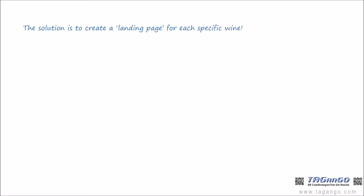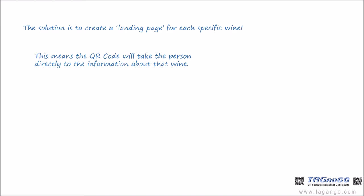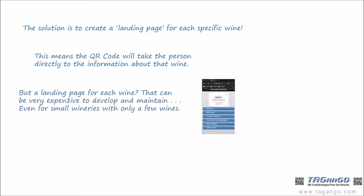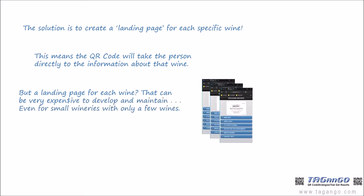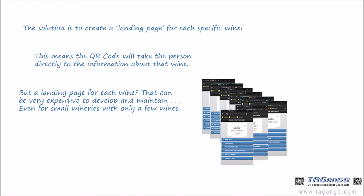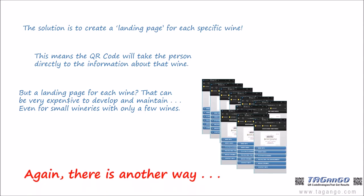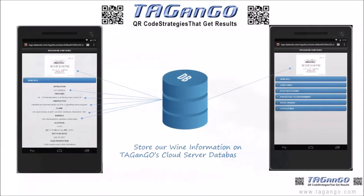The solution is to create a landing page for each specific wine. This means the QR code will take the person directly to the information about that wine. But a landing page for each wine can be expensive to develop and maintain, even for small wineries with only a few wines. Again, there is another way — the solution is to store your wine information on Tag & Go's cloud server database and use a Tag & Go landing page template.